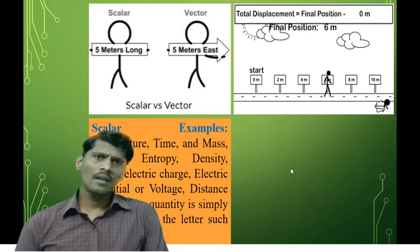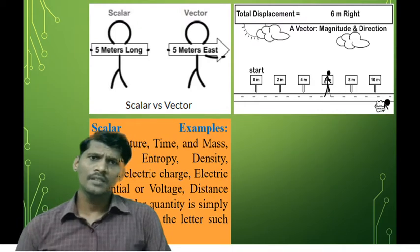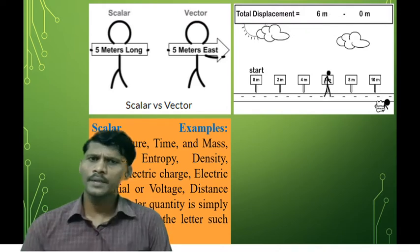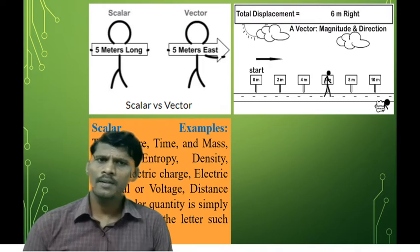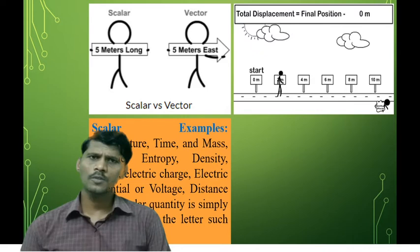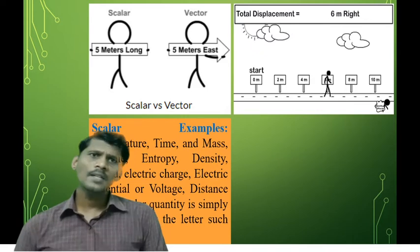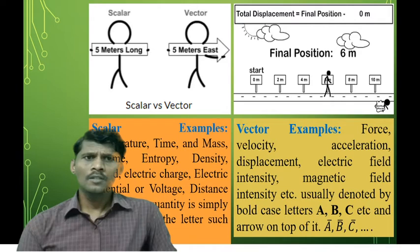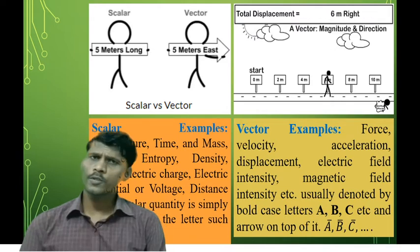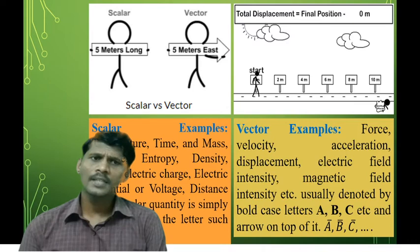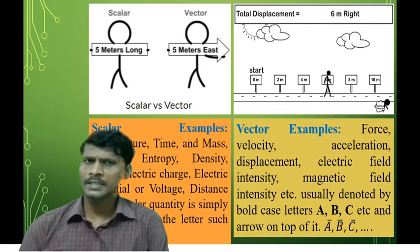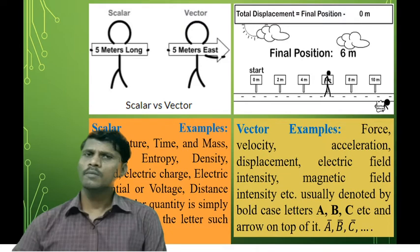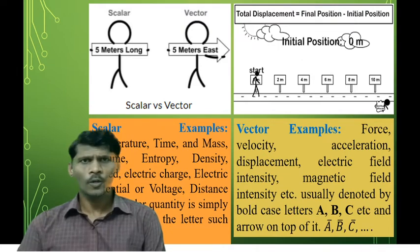Examples of scalar quantities include temperature, time, mass, volume, entropy, electric charge, electric potential, distance, etc. In mathematics, scalar quantities are represented by A, B, C, etc. Examples of vector quantities are force, velocity, electric field intensity, electric force, displacement, and magnetic field intensity. Symbolically, vectors are represented by bold letters or a letter with an arrow on top.